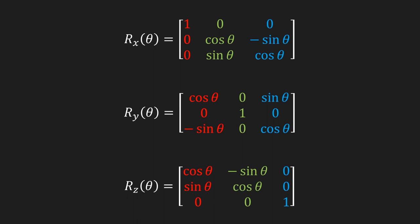Finally, we have our rotation matrices. In three dimensions we need three distinct matrices: one to rotate around the x-axis, one for the y-axis, and one for the z-axis. Notice that in two dimensions we've been rotating around the z-axis, which is why that bottom matrix should look familiar. And that was it for this video.